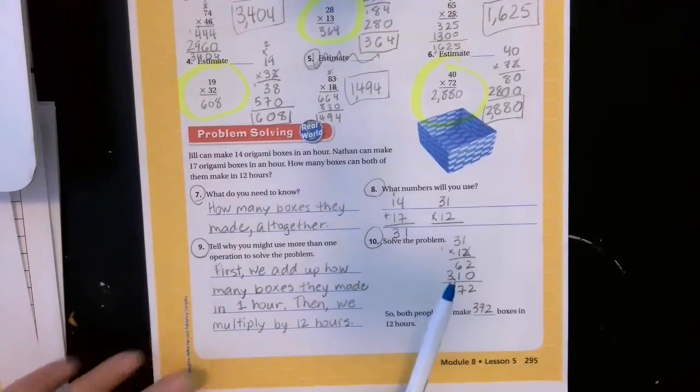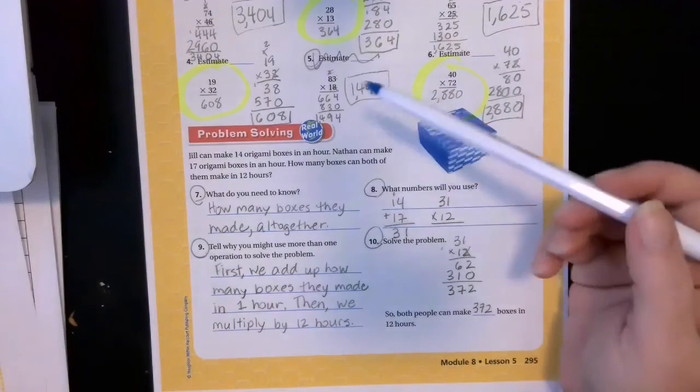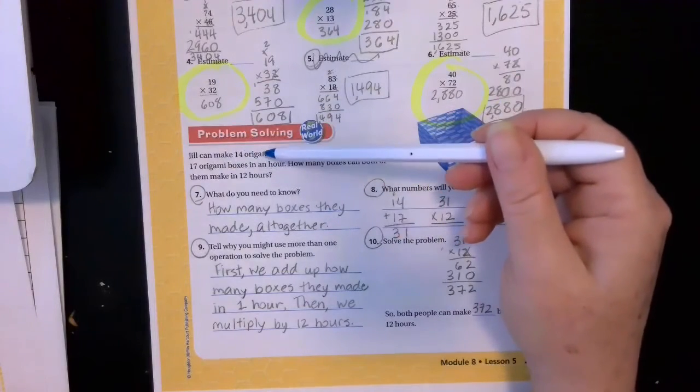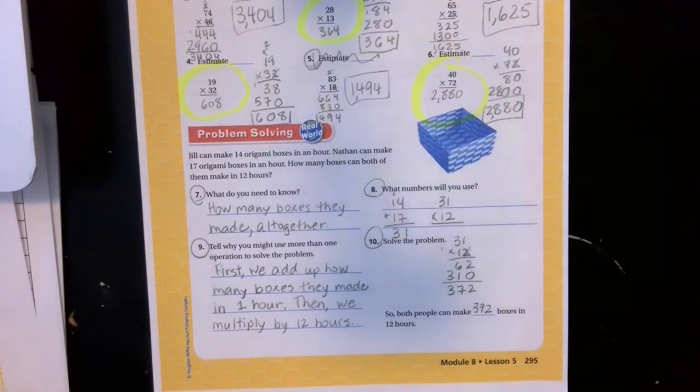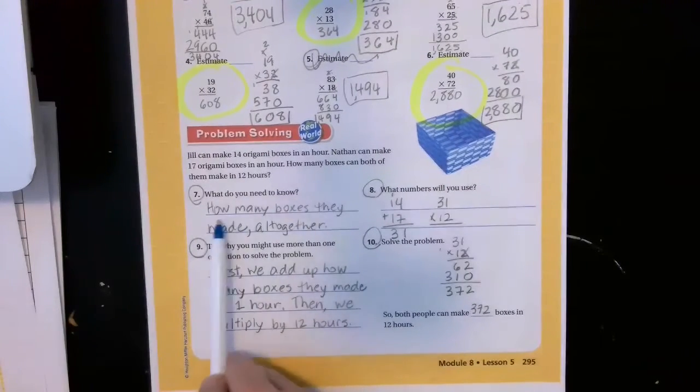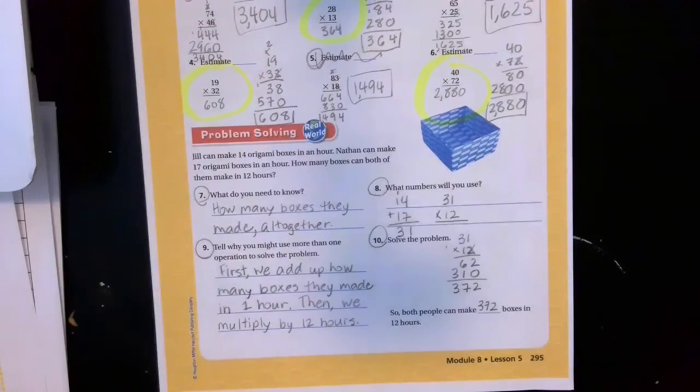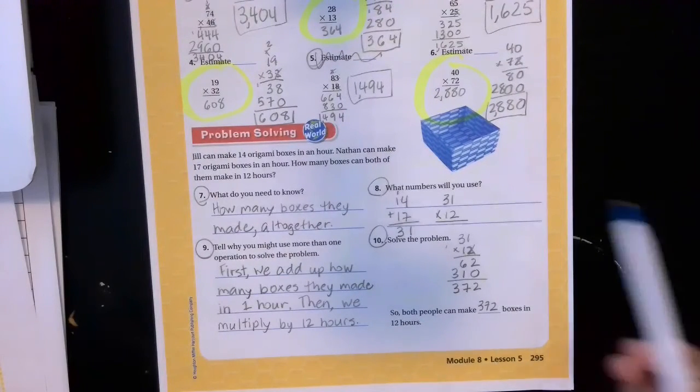Then number 7, I was just going to do 7 and 9. And then we realized that it all ran together as one big problem. And I'm glad that we ended up doing it together in class because I hate problems like this. And I know you probably do too, where you have to write out the words of what you're thinking. It just doesn't work that way in math, in my head. But anyway, we've worked through it okay. Jill can make 14 origami boxes in an hour. Nathan can make 17 origami boxes in an hour. How many boxes can both of them make in 12 hours?